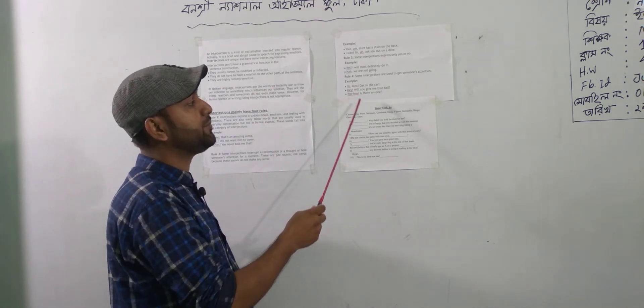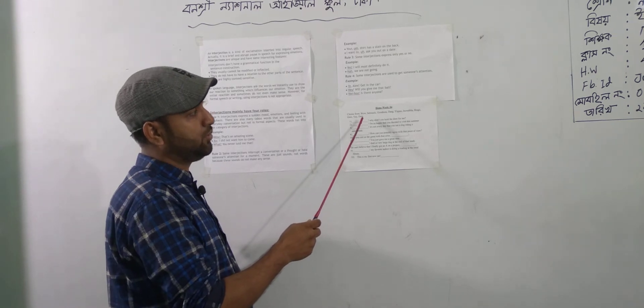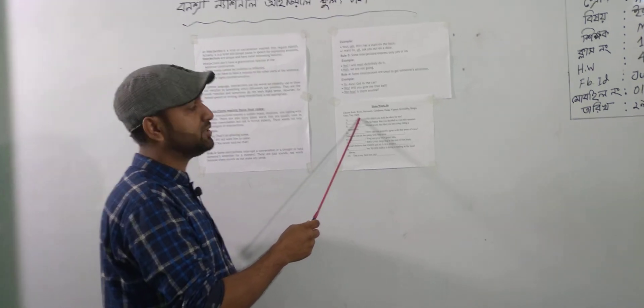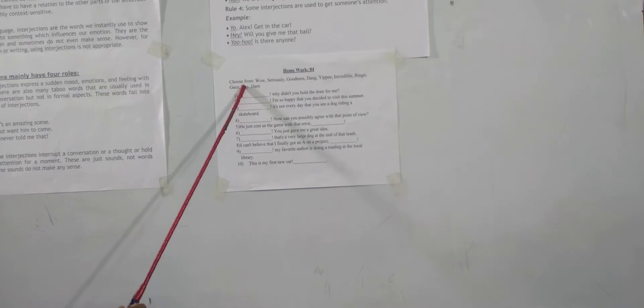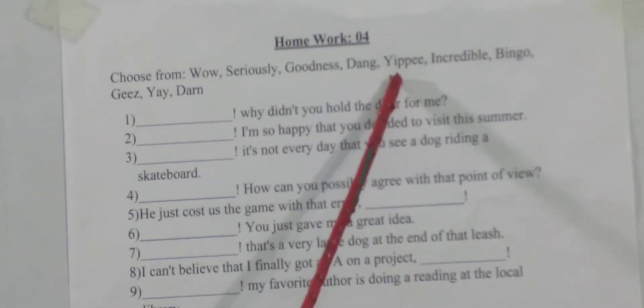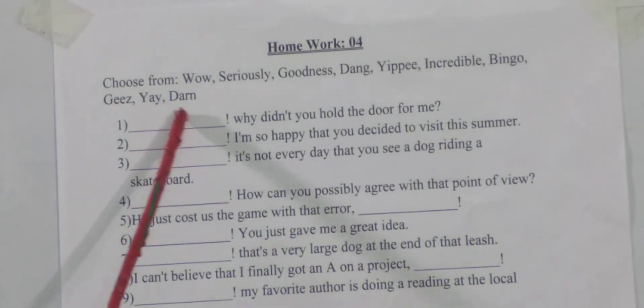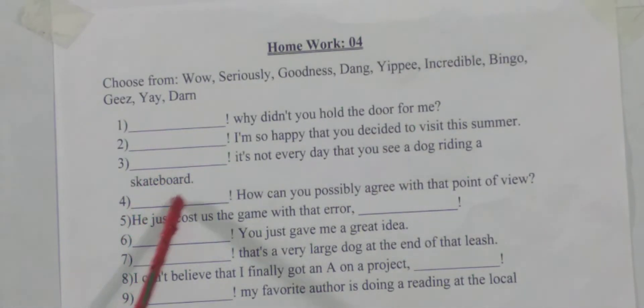Interjections can also be a word or a word group. Examples include: Wow, seriously, goodness, incredible, bingo, yeah. These are all examples of interjections.